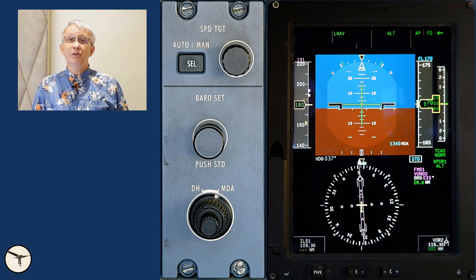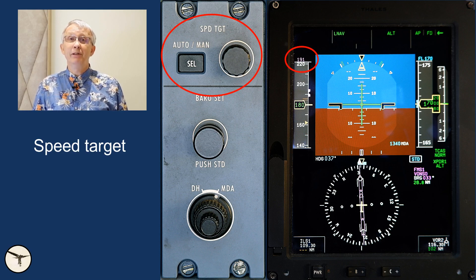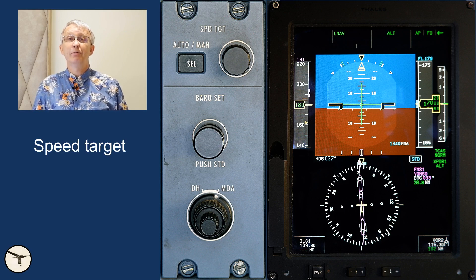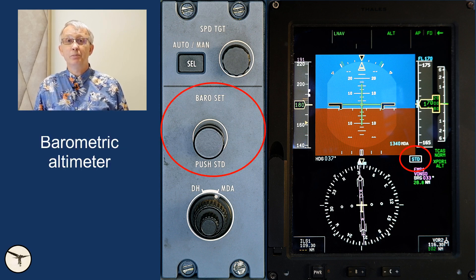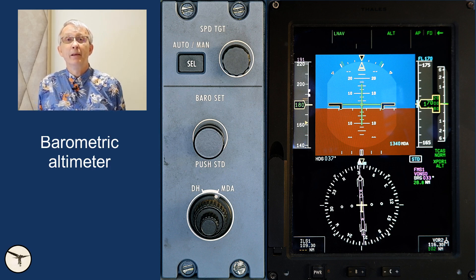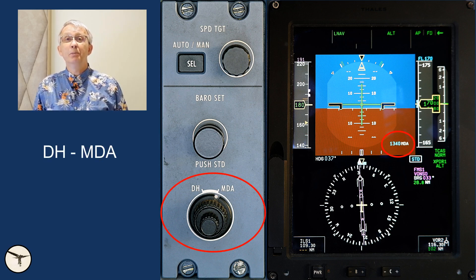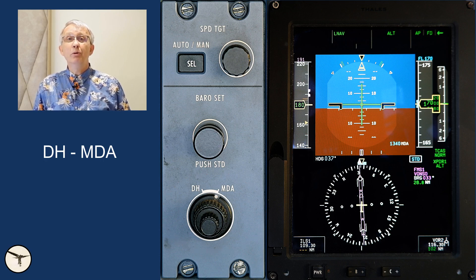On the top we set the speed target, which is the speed we intend to fly. It can be set manually or automatically by the FMS, the flight management system. Next we have a knob used to adjust the barometric setting for the altimeter. And below we have a double knob labeled DH and MDA. We use it to set the minima for instrument approach, and this is the subject for this video.